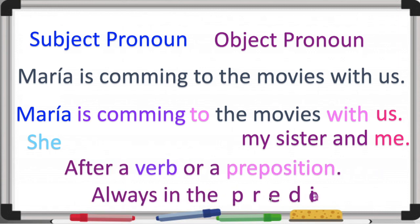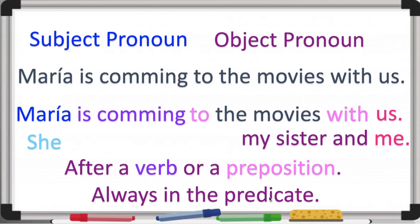So when do we use the object pronoun? After a verb or a preposition. That's why I am highlighting these parts of the sentence so you can recognize them easily. It's always going to be in the predicate — if it's in the subject, then we're going to use it as a subject pronoun. But we're studying object pronouns, so we have to use the predicate.